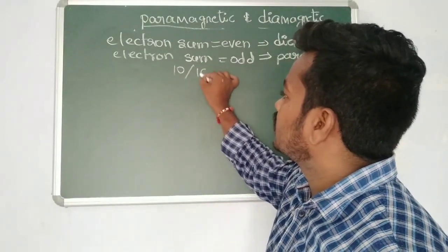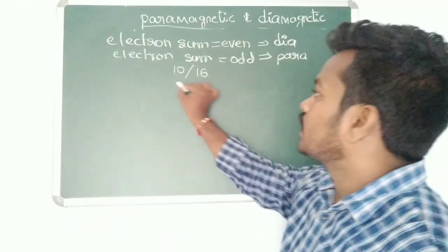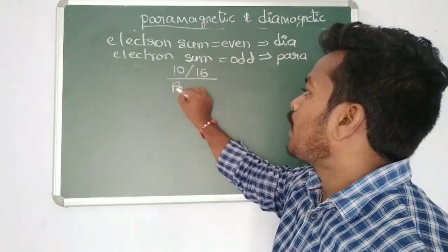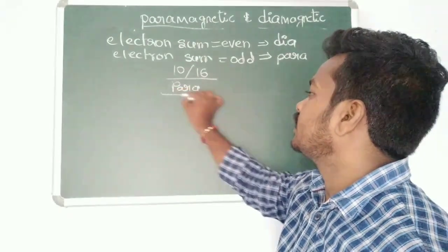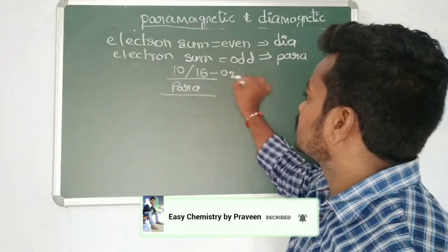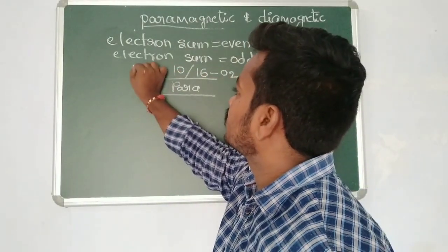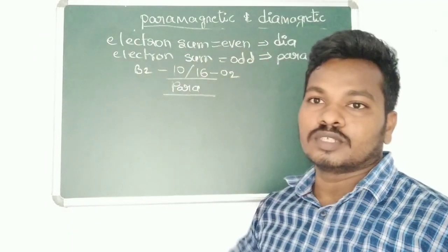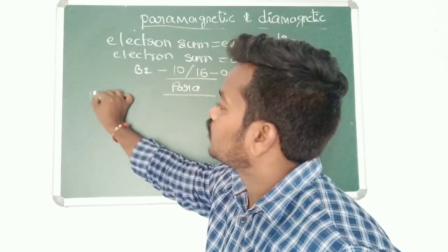However, this trick is not applicable to species having 10 or 16 electrons. Species with 10 or 16 electrons show paramagnetic nature. For example, for 16 electrons you can see oxygen (O₂), and for 10 electrons you can see B₂.